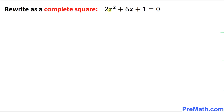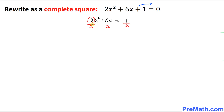And here is our last example. Once again, we want to make sure that only x variables must be on the left hand side. That means this positive one must go on the other side. So we're going to end up with 2x squared plus 6x equals negative 1. The next step is we know that the leading coefficient is 2 and it must be 1, so we divide each and every term by 2. That gives us x squared plus 3x equals negative 1 over 2.